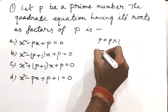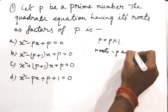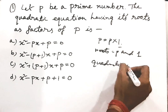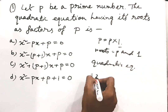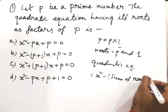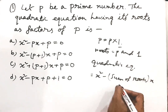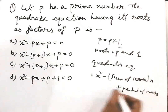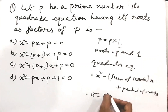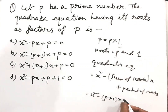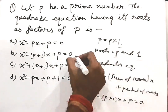So the roots will be P and 1. The quadratic equation will be x squared minus (sum of roots) times x plus (product of roots), which gives x squared minus (P plus 1)x plus P times 1 equals 0, i.e., x squared minus (P+1)x plus P equals 0. So that is the answer.